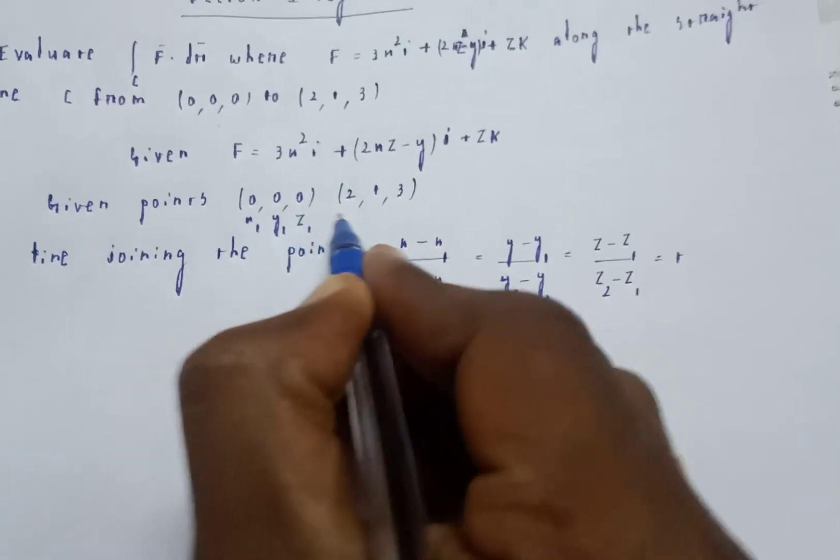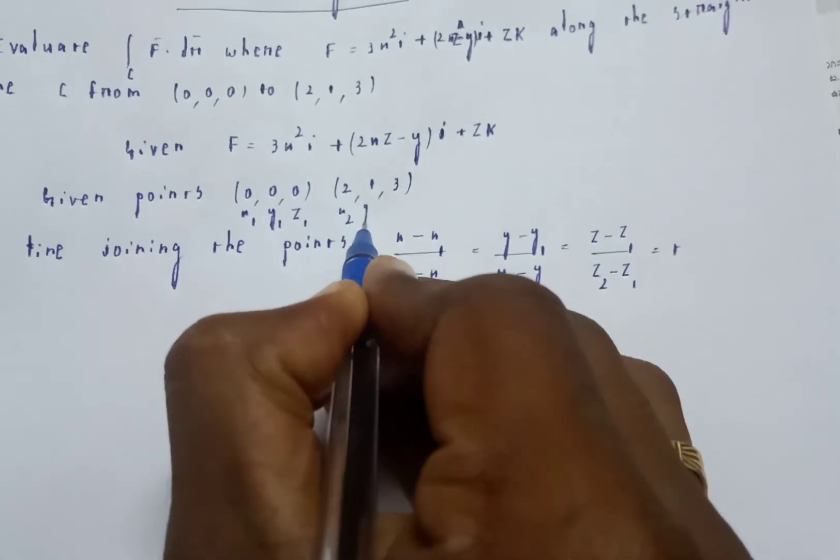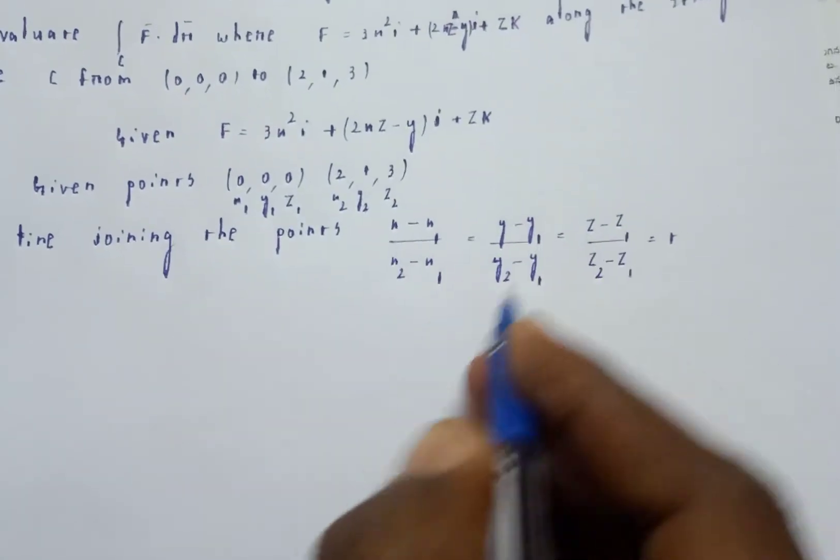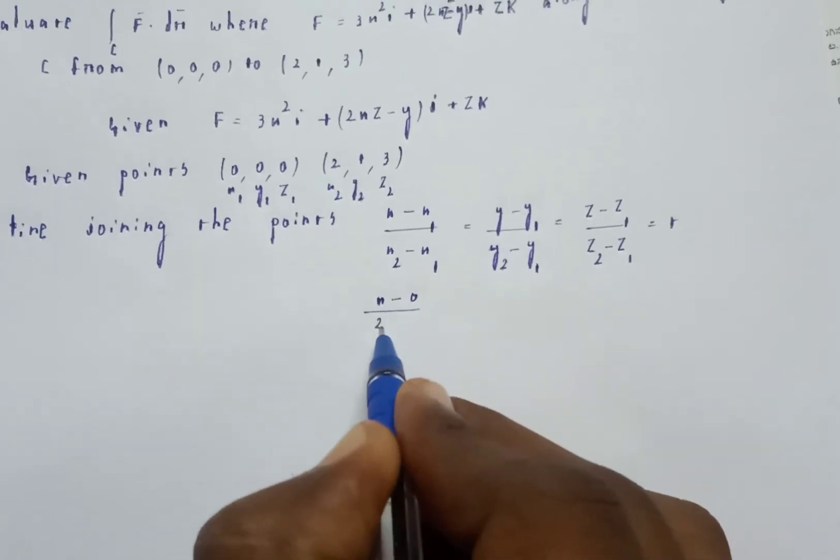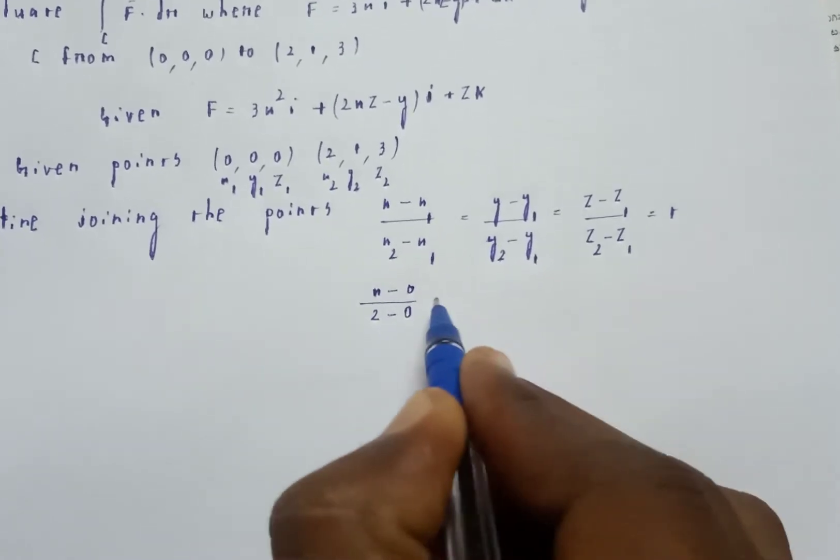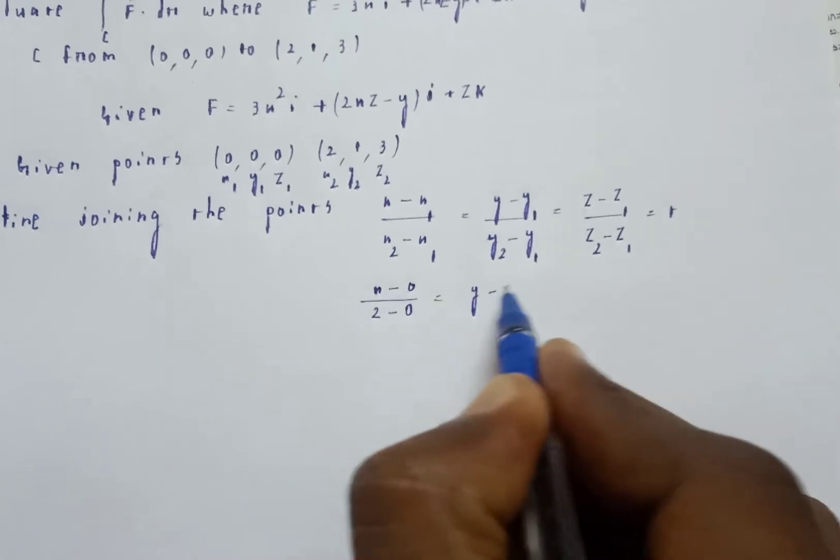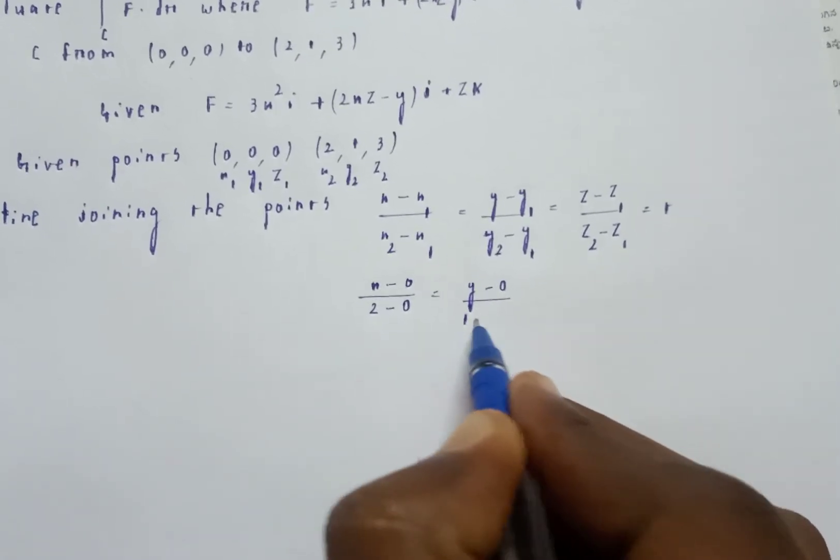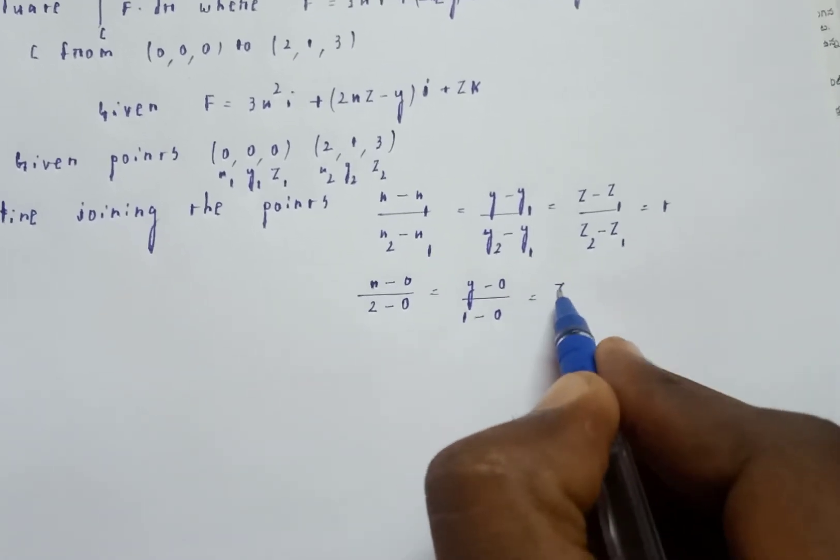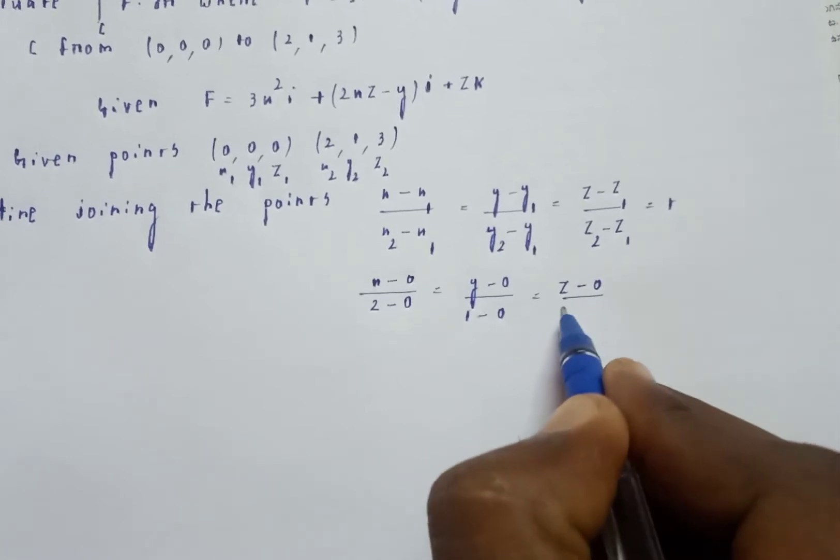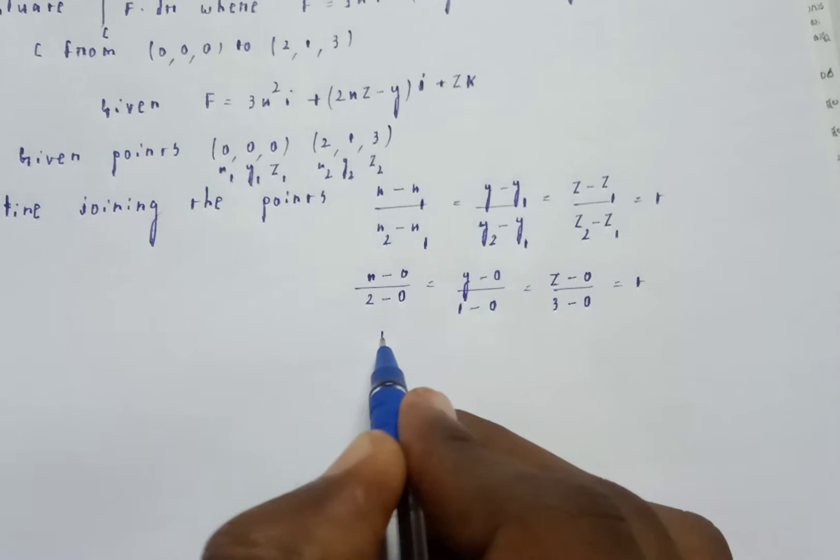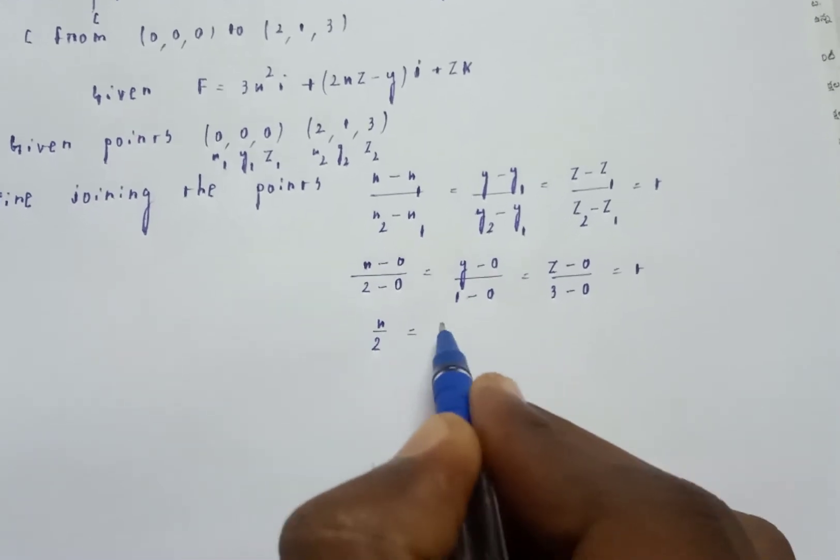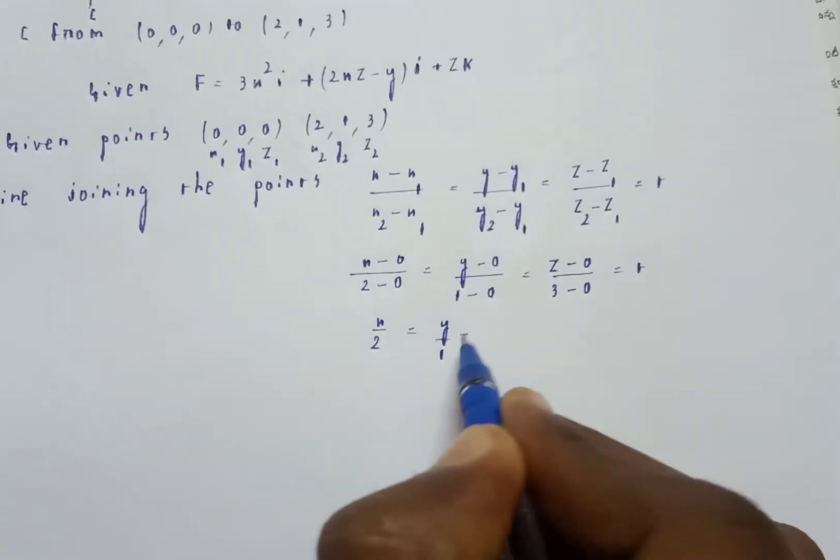In this problem, x1, y1, z1 are (0,0,0) and x2, y2, z2 are (2,1,3). So x minus 0 by 2 minus 0, y minus 0 by 1 minus 0, z minus 0 by 3 minus 0.